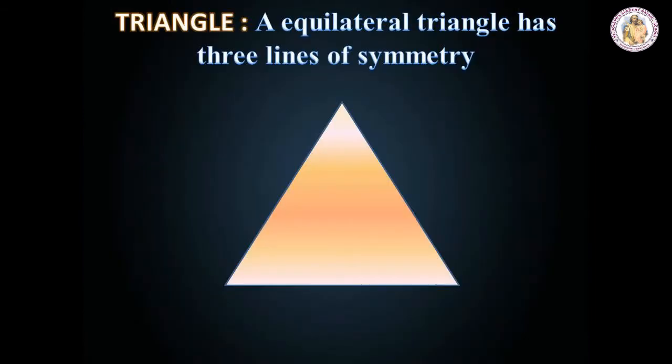Next, we are going to see another geometrical shape. What is this called? Yes, it is triangle. An equilateral triangle has three lines of symmetry.